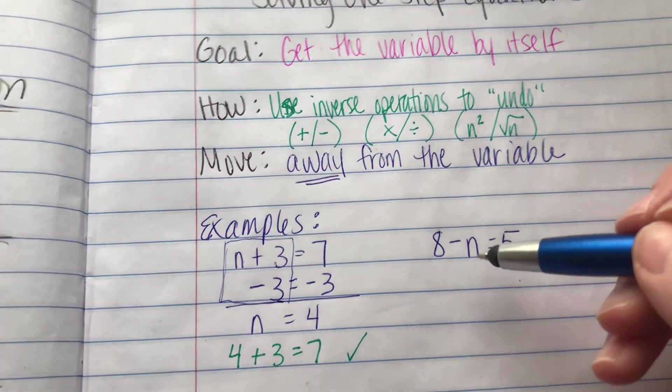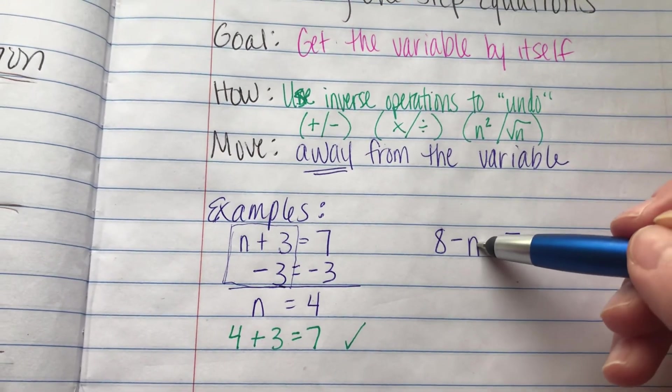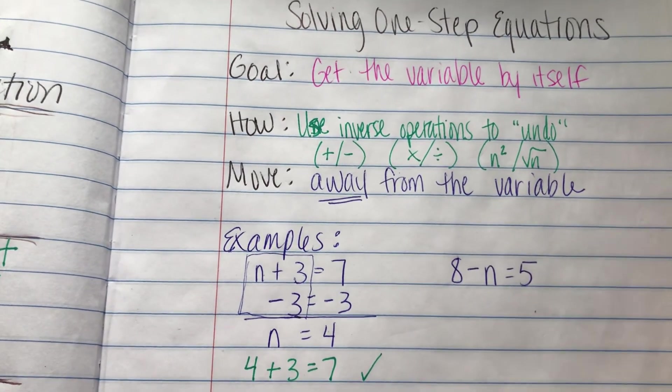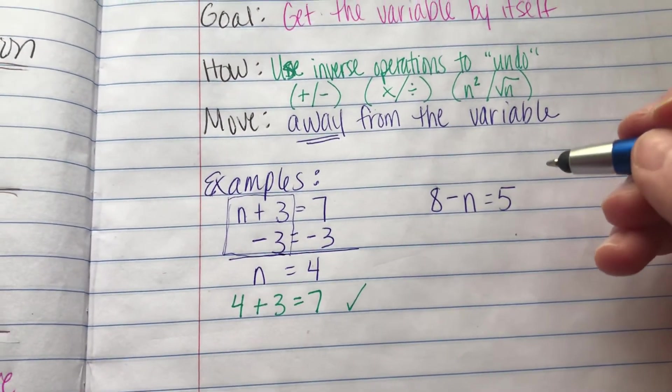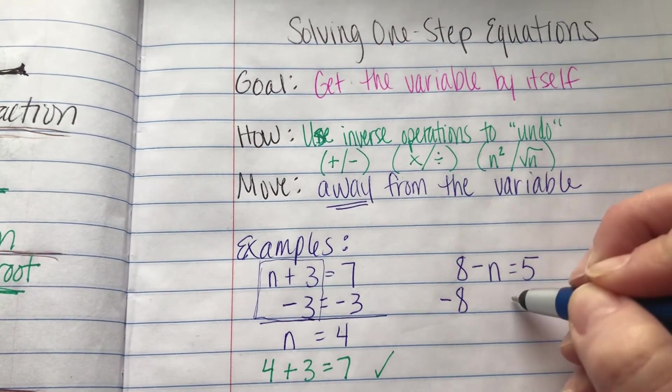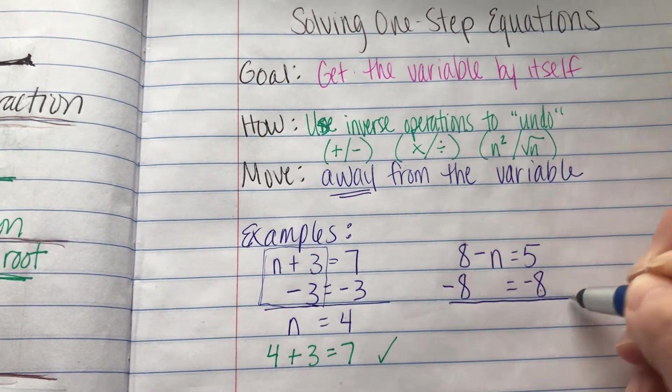So similar kind of problem. We have an n. Actually, we have a negative n. An 8 was added to it. And we need to undo that by taking away the 8. Getting rid of the 8. Undoing what was done to n. And what we do to one side, we do to the other as well.